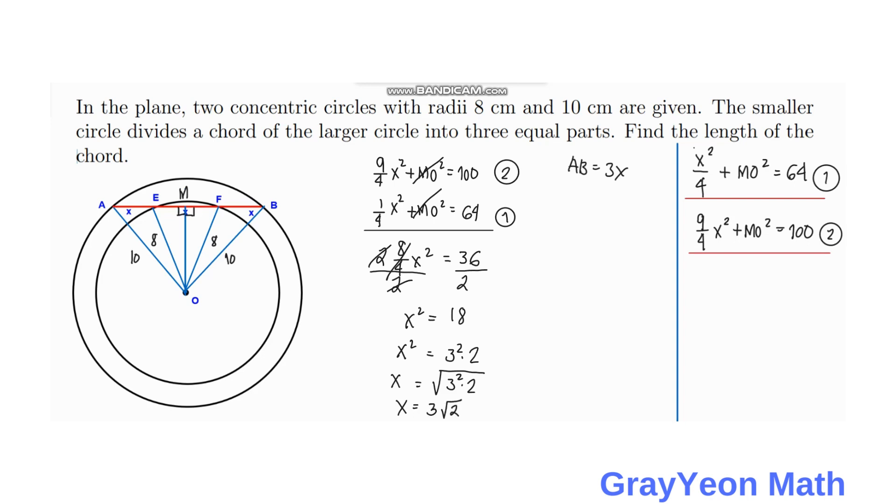Actually, we are looking for the chord AB, which equals 3x. So AB equals 3 times 3 square root of 2. AB equals 9 square root of 2 centimeters. And that is our answer.